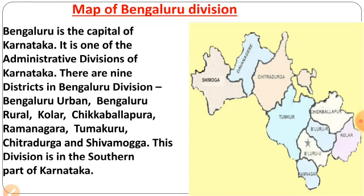First we will begin with Bengaluru division. On your right side is the map of Bengaluru division. In Bengaluru division, nine districts are there: Bengaluru Urban, Bengaluru Rural, Kolar, Chikkaballapur, Ramanagara, Tumkuru, Chitradurga, Shivamogga, and Davanagere. This division comes in the southern part of Karnataka. Bengaluru division and Mysuru division are in the southern part, while Kalaburagi division and Belagavi division are in the northern part of Karnataka.